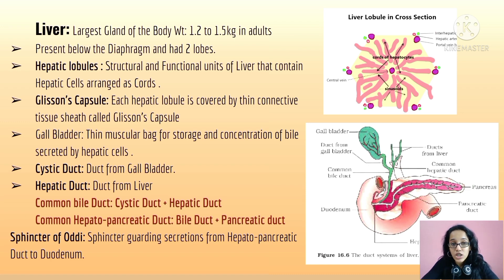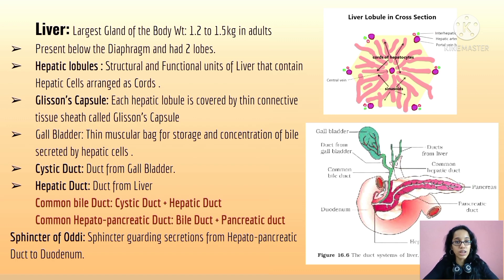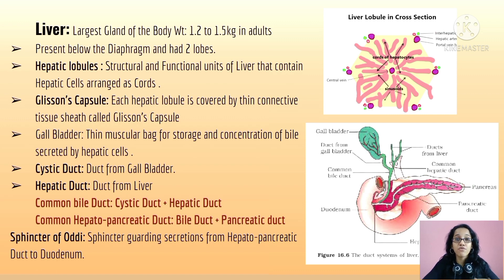The liver is the largest gland of our body, weighing 1.2 to 1.5 kilograms in adults. It is present below the diaphragm and has two lobes. The hepatic lobule is the structural and functional unit of the liver that contains hepatic cells arranged as cords.